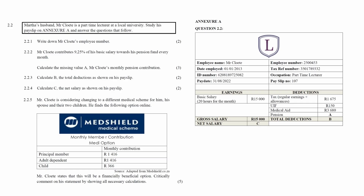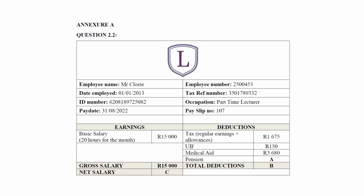Question 2.2 consists of five finance questions designed to assess your understanding of payslips, pension funds, and medical scheme contributions. You are given a payslip of a part-time lecturer at a local university in Annexure A, which lists identification details as well as earnings and deduction details. In Question 2.2.1, you are instructed to write down Mr. Clouty's employee number. From the payslip, his employee number is 2500453.